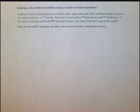Solving a value mixture problem using a system of linear equations. A delivery truck is transporting boxes of two sizes, large and small. The combined weight of a large box and a small box is 75 pounds. The truck is transporting 70 large boxes and 55 small boxes. If the truck is carrying a load of 4,800 pounds in boxes, how much does each type of box weigh?